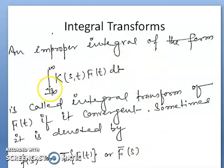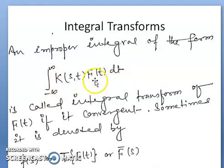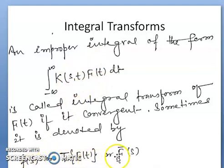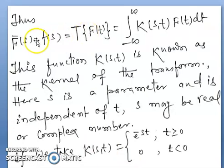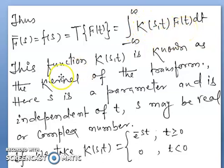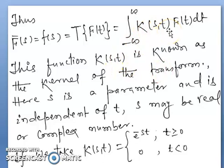In the improper integral from minus infinity to infinity of k(s,t) f(t) dt, the function k(s,t) is called the kernel of the transform. This integral is denoted by F(s), T{f(t)}, or F̄(s), which can be written as the integral from minus infinity to infinity of k(s,t) f(t) dt. This function k(s,t) is known as the kernel of the transform.